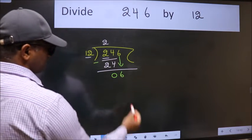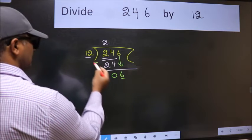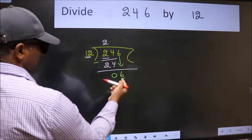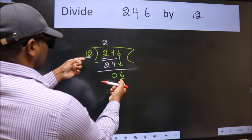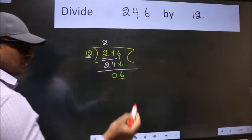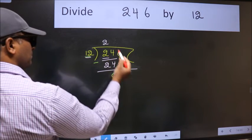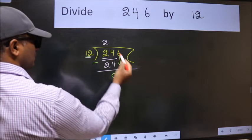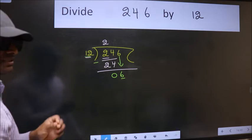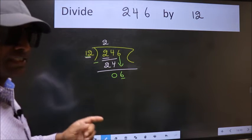And the mistake is this. Here we have 6, and here 12. 6 is smaller than 12. So what many do is, they directly put a dot and take 0. Which is wrong.